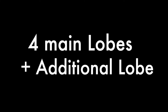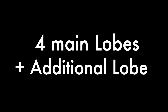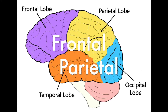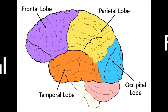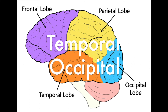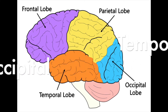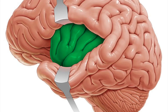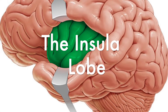There are four main lobes that you need to know, plus an additional one: the frontal lobe, the parietal lobe, the temporal lobe, and the occipital lobe. Additionally, we can add a lobe known as the insular.